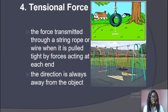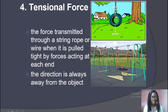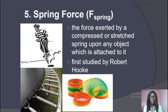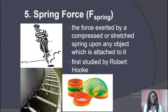Tension force is the force transmitted through a string, rope, or wire when it is pulled tight by forces acting at the ends. For example, a tire attached to a rope experiences tension force, and the direction is always away from the object. We also have spring force — the force acted by a compressed or stretched spring upon an object attached to it, similar to Hooke's Law. It is a contact force because your hand is in contact with the spring.